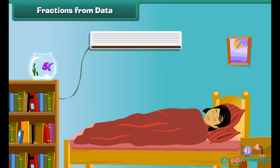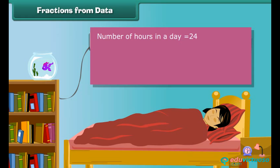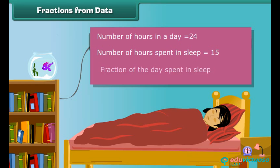Sandhya is Rishabh's little sister. She sleeps fifteen hours a day. Let us compute the fraction of the day she spends sleeping. Number of hours in a day is equal to twenty-four. Number of hours spent in sleep is equal to fifteen. Fraction of the day spent in sleep is equal to fifteen by twenty-four, which equals five by eight.